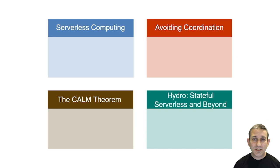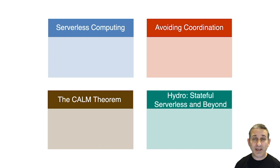I'll talk in four chapters. The first chapter will look at the state of serverless computing today. Then we'll talk about one of the key issues in performance and correctness of distributed systems, which is avoiding coordination, and the CALM Theorem, which tells us when exactly we can correctly avoid coordination. And then finally, I'll talk about work going on in the RISE Lab at Berkeley now — the Hydro Project — topics like stateful serverless computing and beyond.